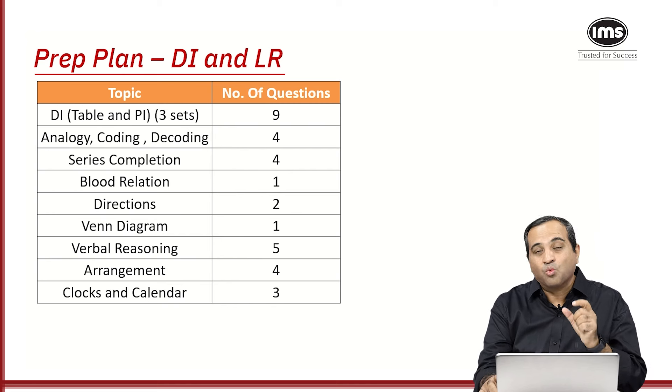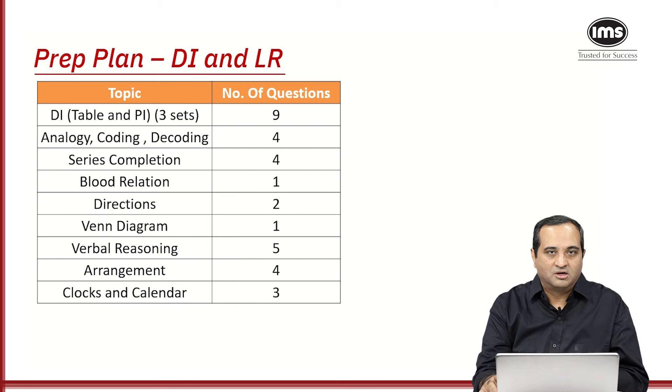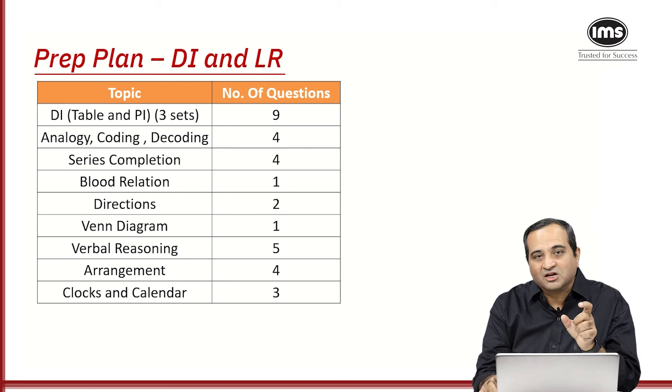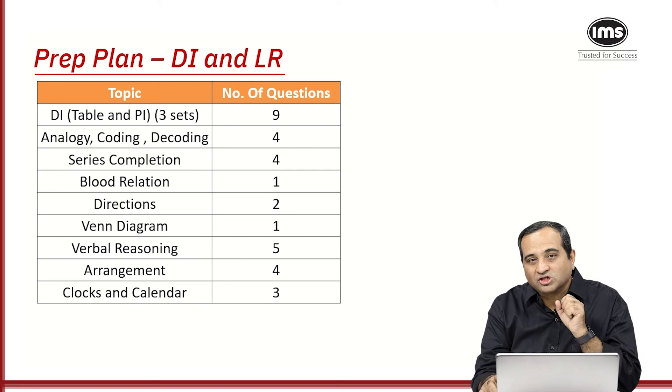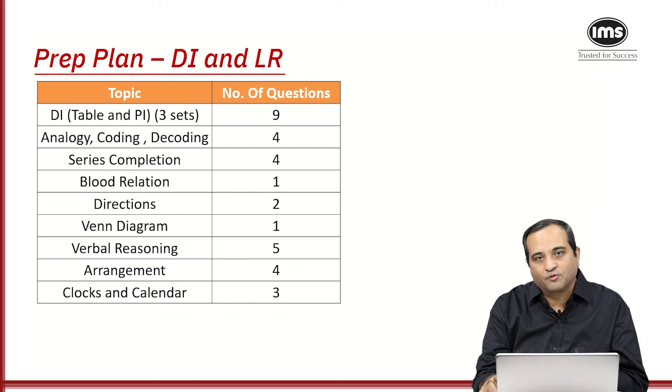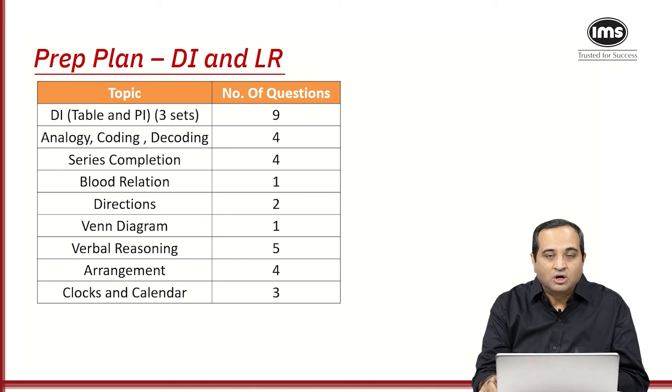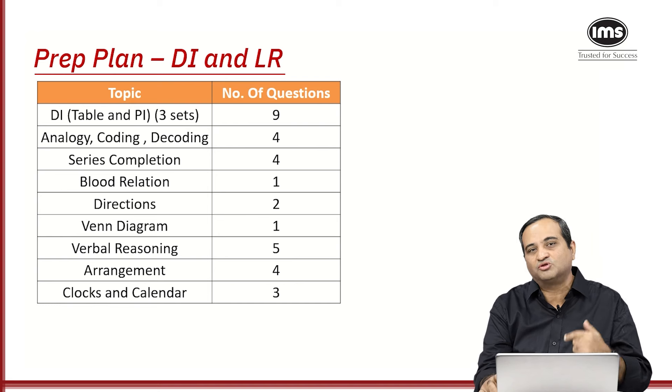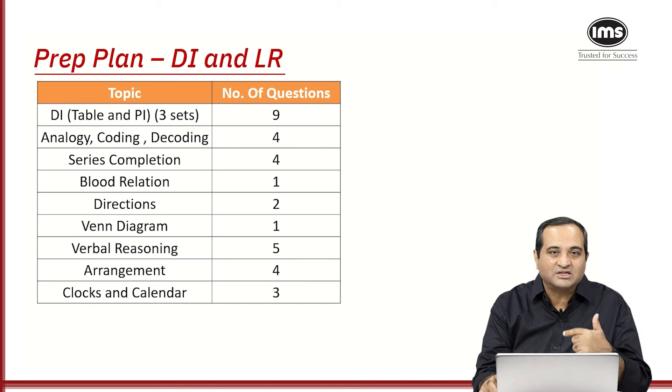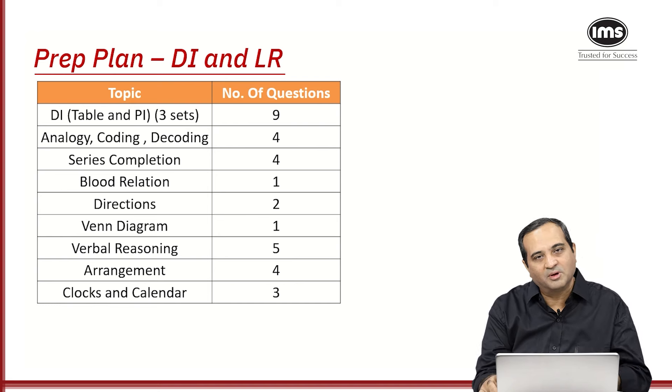Remember, you also get verbal reasoning questions here. What are the verbal reasoning questions? You will get statement and conclusion, statement and cause and effect, syllogisms type of questions. So always remember, in LR, the type of questions that you get are relatively easier compared to the other sections. So the accuracy of these 33 questions should be much, much higher than your accuracy of QUANT or the verbal section.